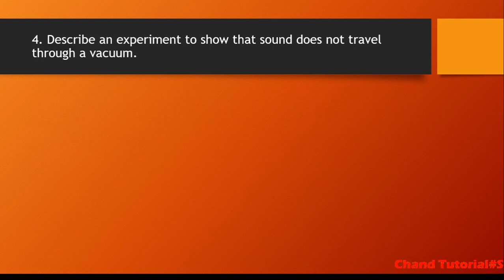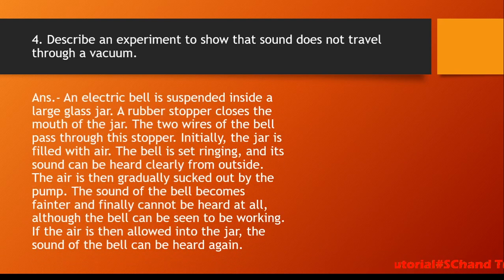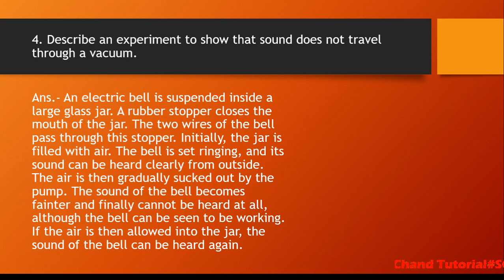Next: describe an experiment to show that sound does not travel through a vacuum. Sound always requires a medium to travel. This is the bell jar experiment. An electric bell is suspended inside a large glass jar and a rubber stopper closes the mouth of the jar, with two wires coming out from the stopper. Initially the jar is filled with air, the bell is set ringing, and sound can be heard clearly from outside.